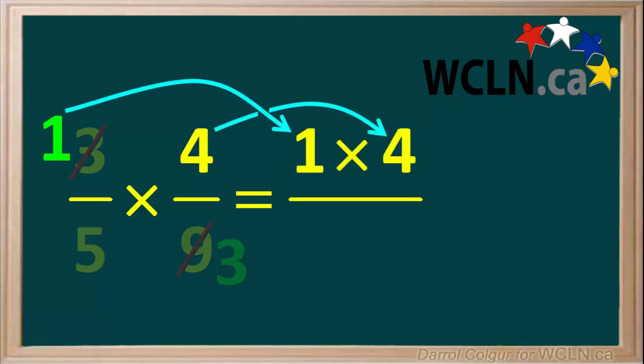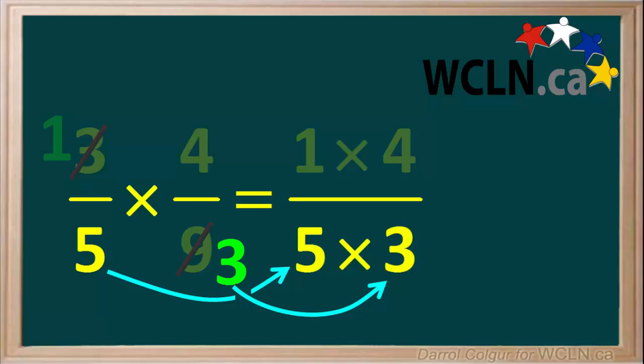The 1 and the 4 are both in the numerator of the new fraction, and there's a multiplication sign between them. And the 5 and the 3 are both in the denominator of the new fraction, and there's also a multiplication sign between those.